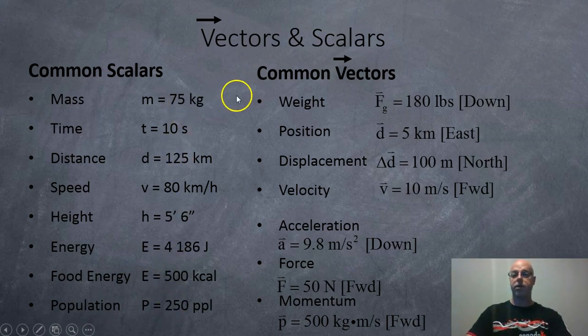Then we get over to our vectors which have an arrow. Weight, force of gravity 180 pounds down. Position 5 kilometers to the east. Displacement 100 meters to the north. Velocity 10 meters per second forward.